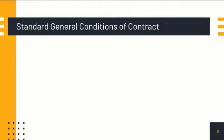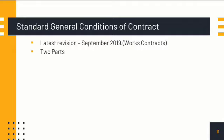The latest revision of the standard general conditions of contract was made in September 2019. We are looking into the standard general conditions of contract for works contracts. We also have service contracts, for which there is a separate standard general conditions of contract. Hereafter, we will refer to these as GCC for works contracts and GCC for service contracts. In this video, we look into only the aspects of GCC for works contracts.